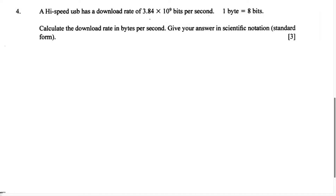A high-speed USB has a download rate of 3.84 times 10 to the 9th bits per second. It has a download rate — when we hear the word 'rate', we normally think of speed. They tell us it has a download rate, or download speed, of 3.84 times 10 to the 9th bits per second. This is the rate, and the units are bits per second.